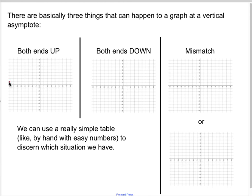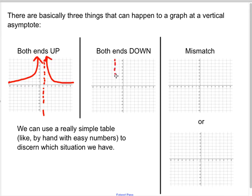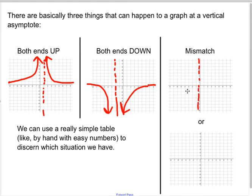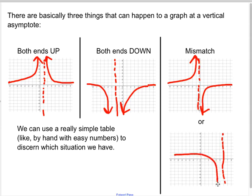One thing that can happen is if we have an asymptote at one, both ends can go up. Or say I have an asymptote at negative two, both ends could go down. Or I could have a mismatch where one end goes up and the other goes down — or the left end goes down and the right end goes up. They're two different options.